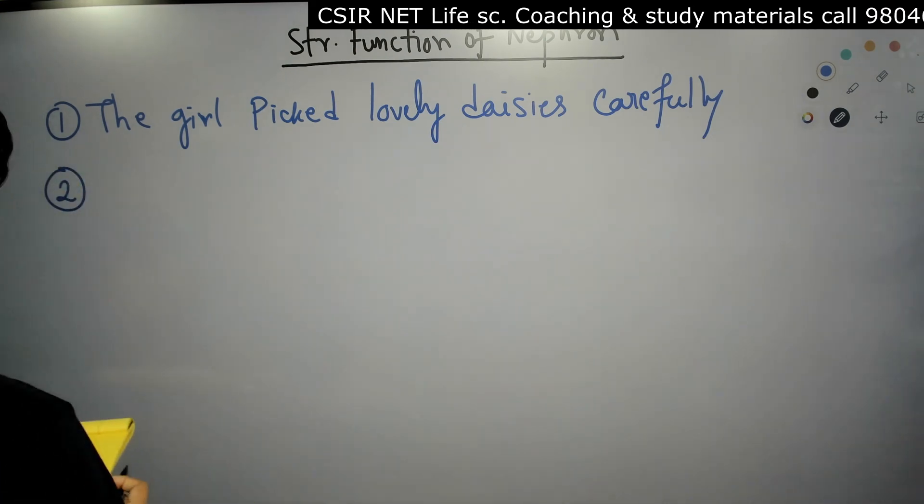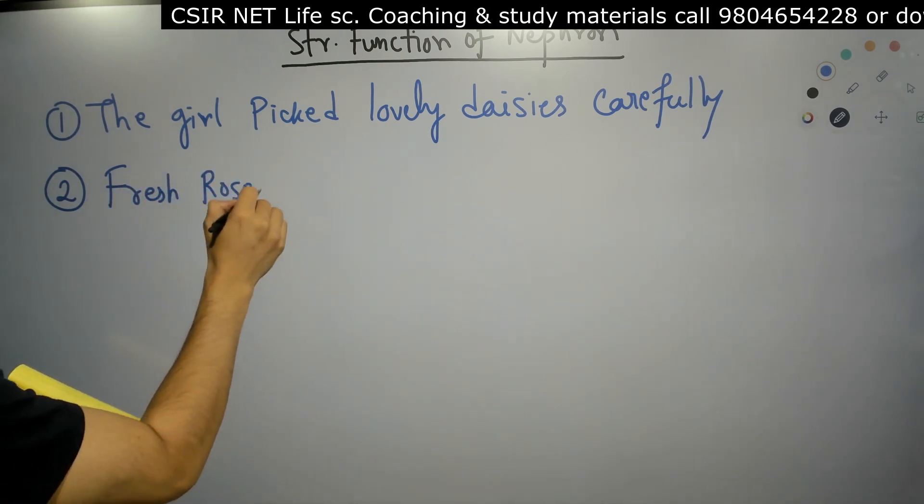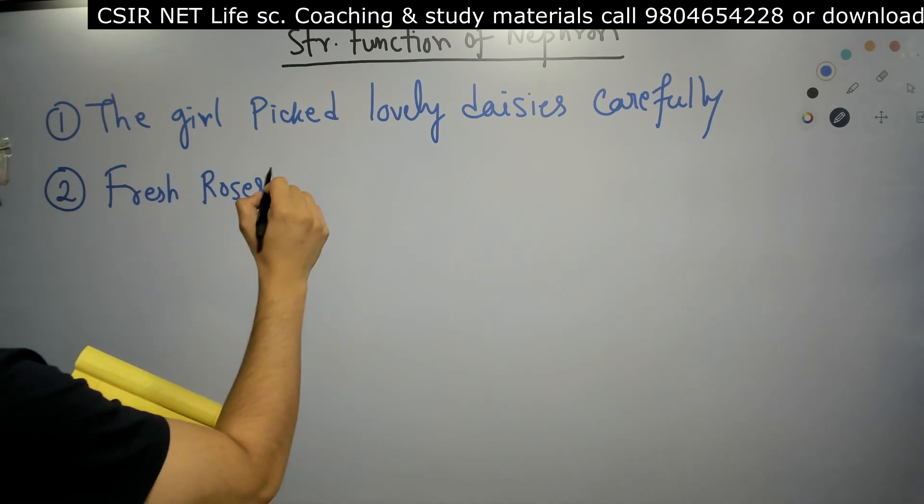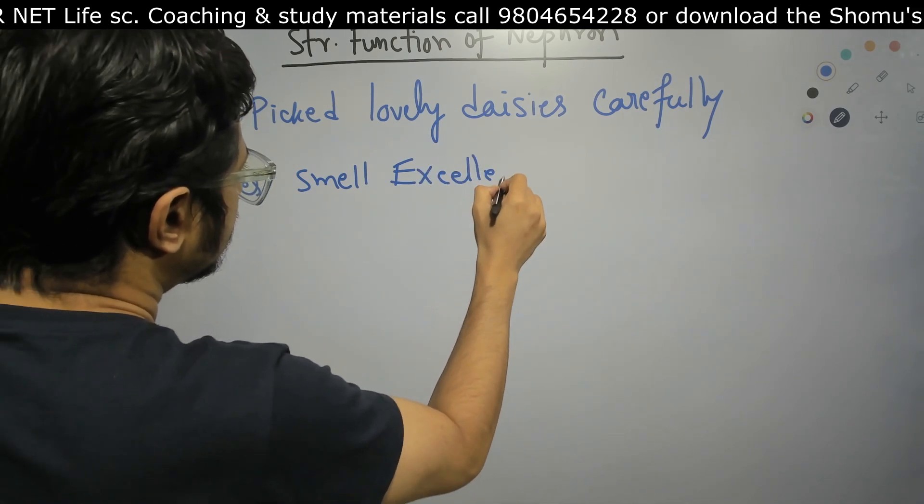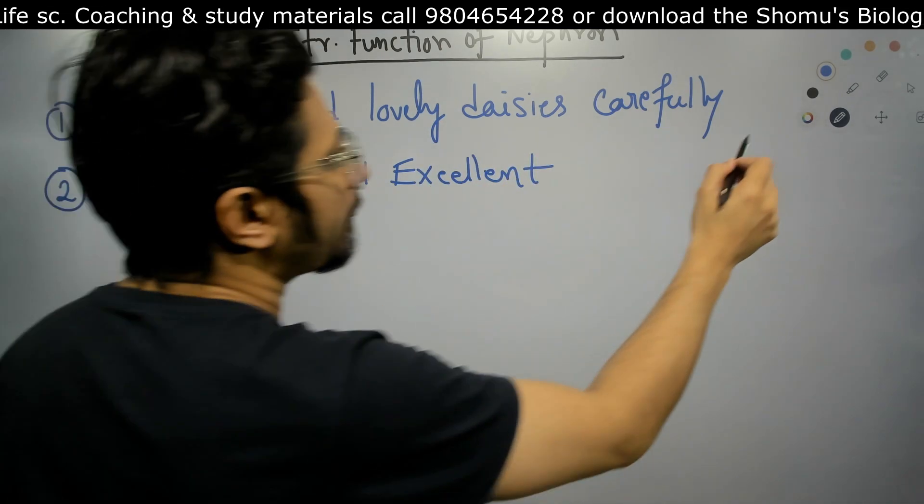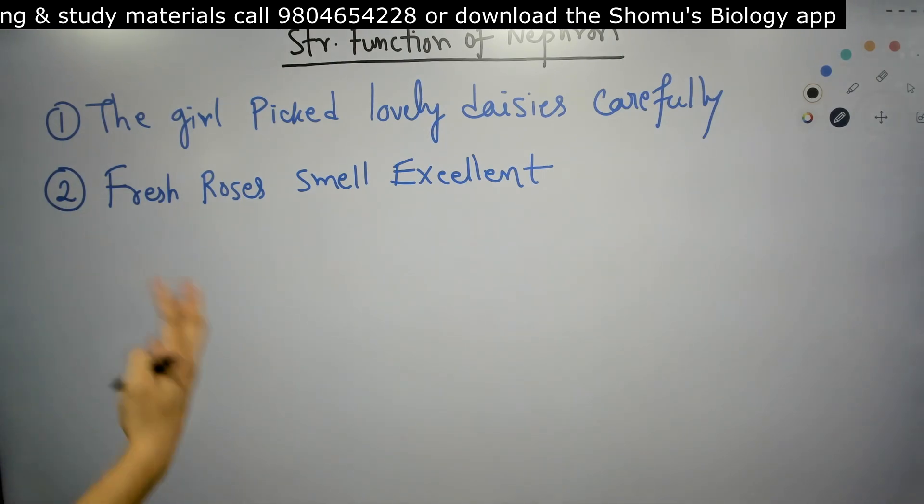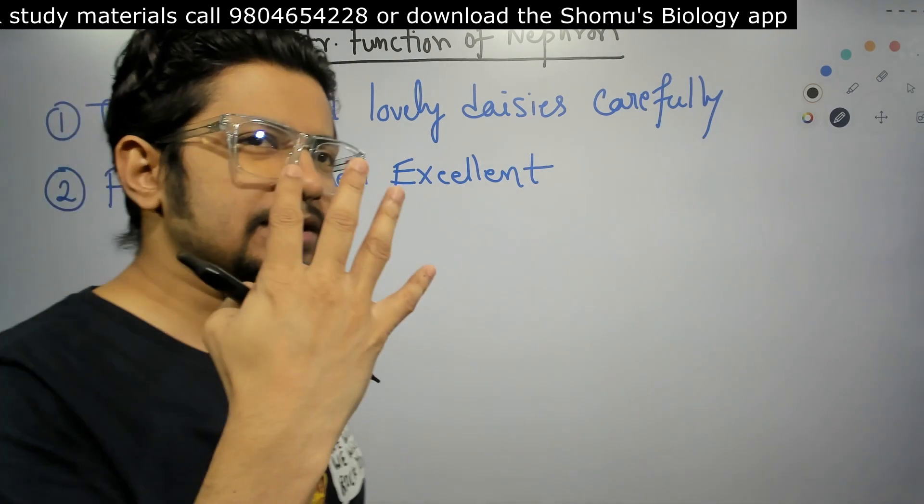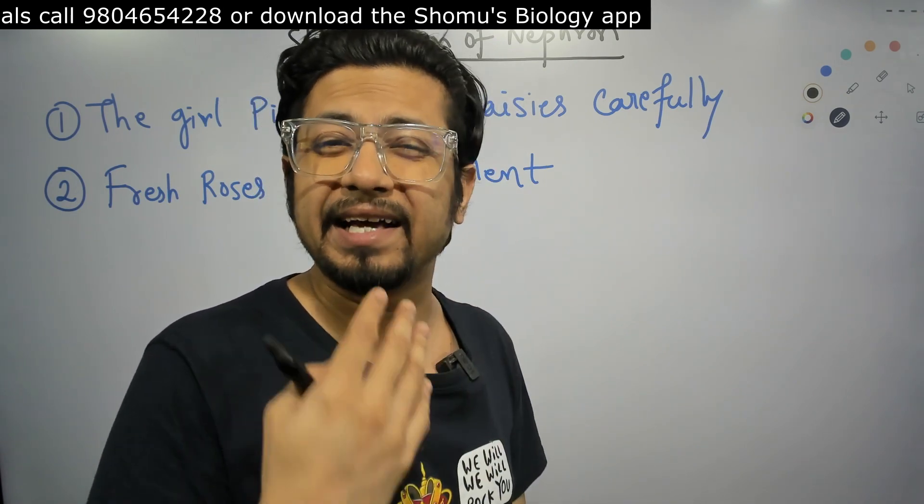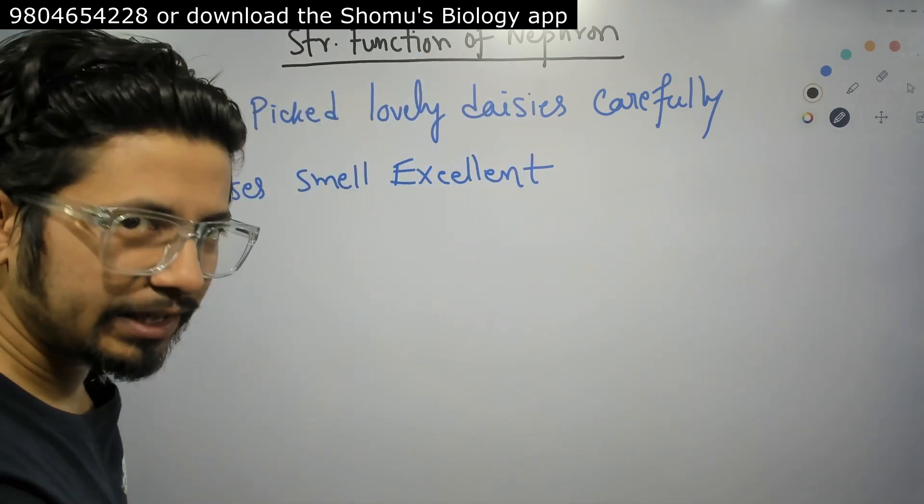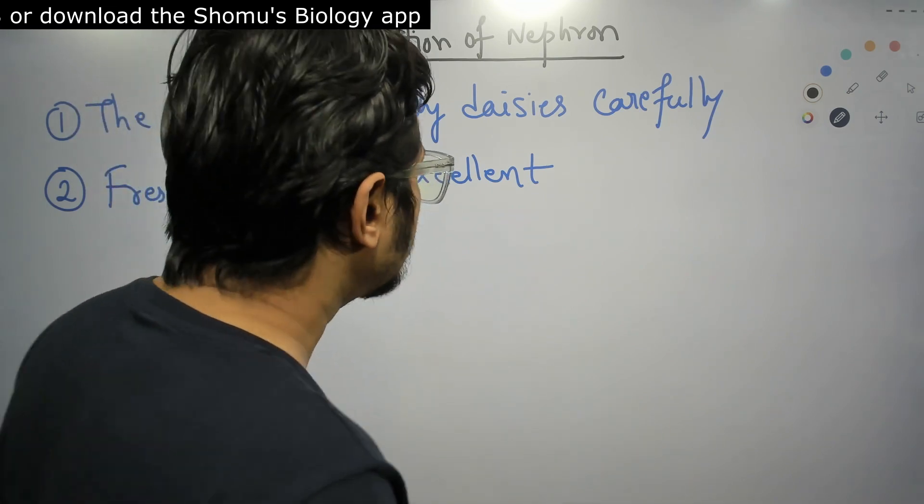The first mnemonic is: the girl picked lovely daisies carefully. The second mnemonic is: fresh roses smell excellent. Just visualize the lovely red colored roses that smell excellent, and a girl picking a daisy. These are the two mnemonics.